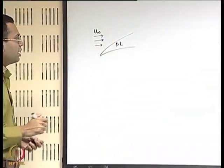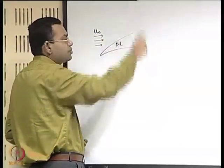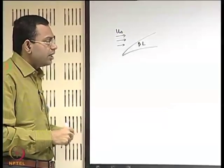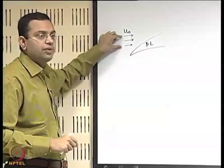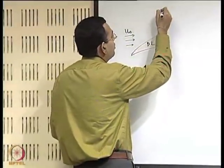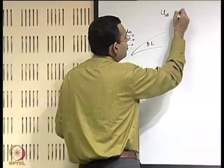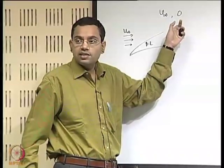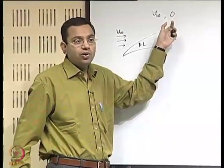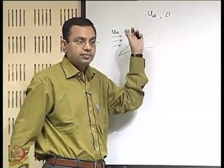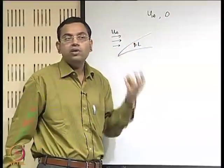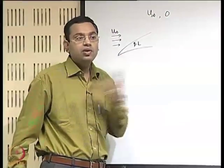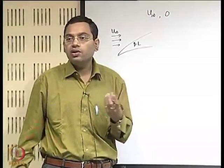The free stream velocity is u-infinity, but as it goes past the body, this may change because of the curvature of the body. For a 2-dimensional flow, the x-component of velocity is u-infinity and the y-component is 0. Originally this is an irrotational flow, and an irrotational flow will remain irrotational if it is inviscid. Outside the boundary layer, viscous effects are not felt, and therefore whatever flow was originally irrotational will tend to remain irrotational.